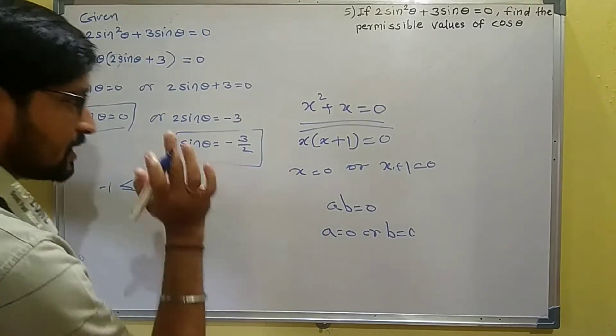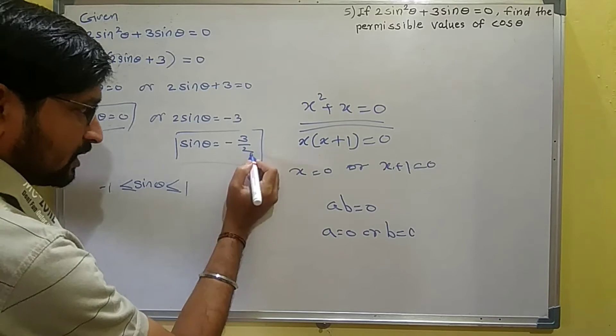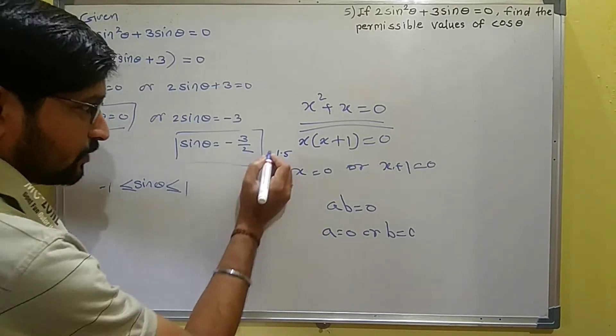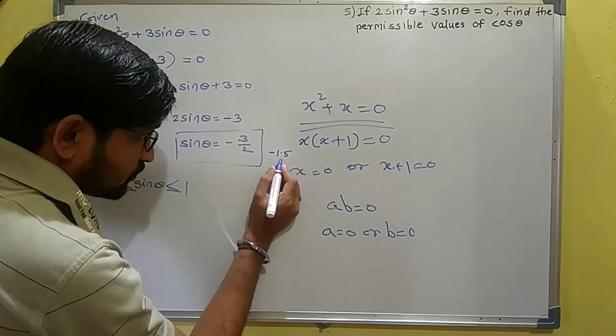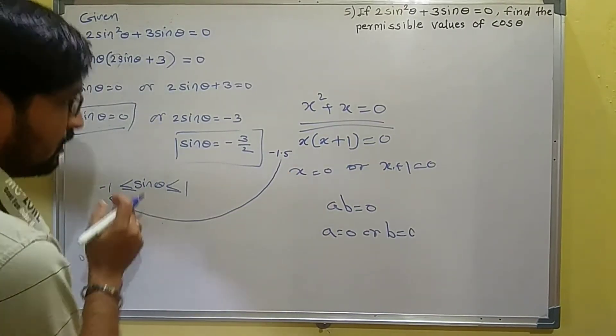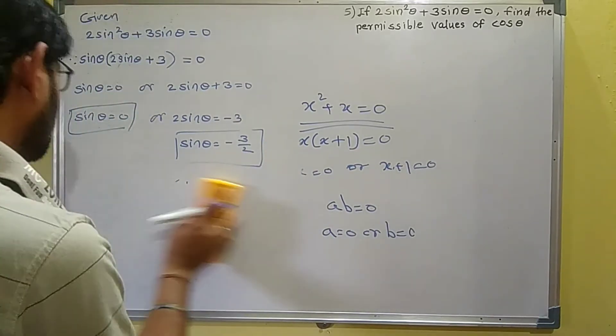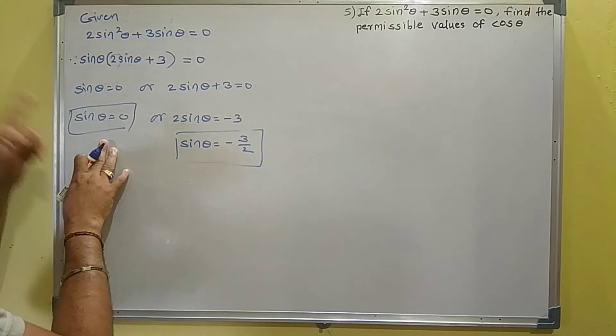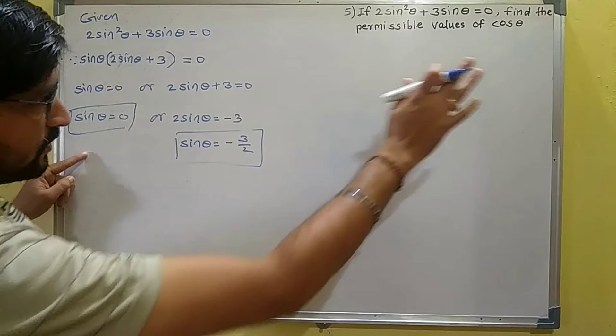But remember, sinθ always lies between -1 and 1. This value -3/2 equals -1.5, which is greater than -1 in magnitude and outside the valid range. Therefore, we take sinθ = 0 as the only possible value.